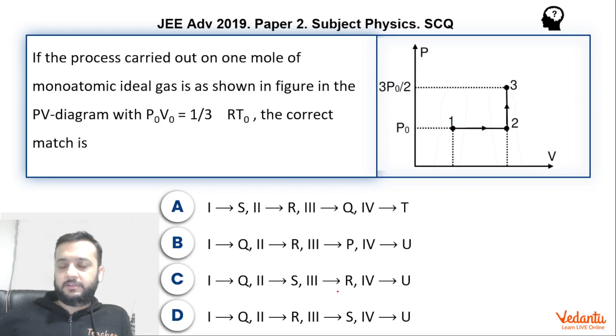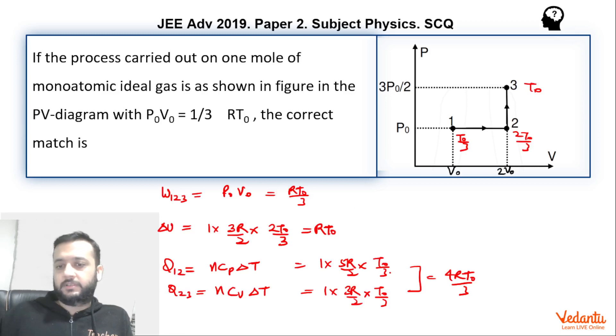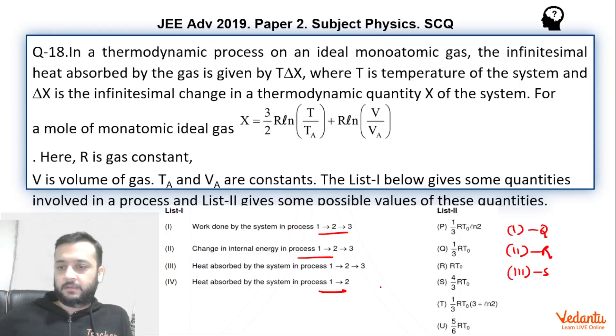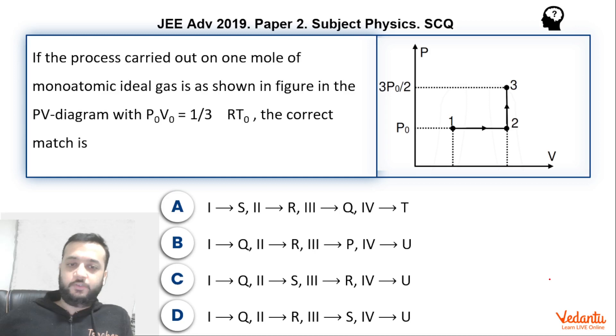Heat absorbed by the process in one system in one two which we have already found is how much? 5RT0 by 6. So that means U. So fourth matches with U. So Q R S U. Q R S U. Option D is the correct answer.